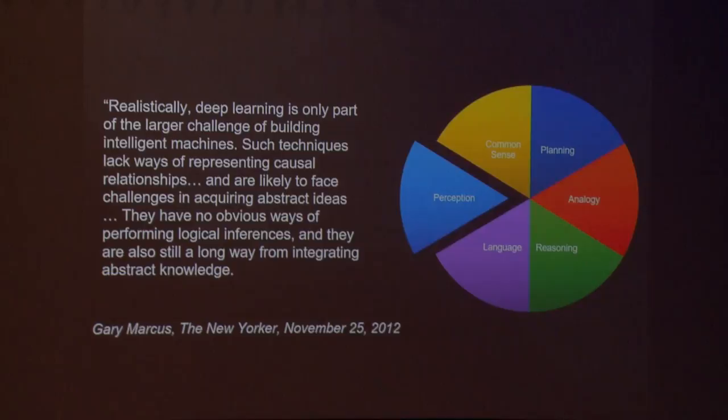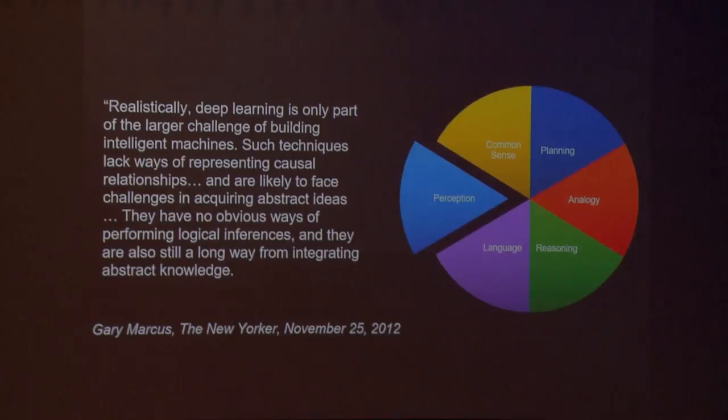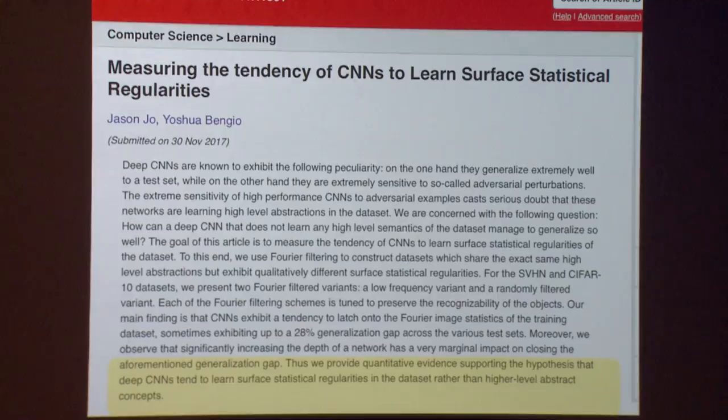I saw this coming a while ago. I wrote a New Yorker piece about this a little over five years ago saying: 'Realistically, deep learning is only part of the larger challenge of building intelligent machines. Such techniques lack ways of representing causal relationships and are likely to face challenges in acquiring abstract ideas. They have no obvious ways of performing logical inferences and are still a long way from integrating abstract knowledge.' I stand by every word. It's made progress on perception, but none of the other things that go into cognition. Here's Yoshua Bengio — one of the three founders of deep learning — with a recent paper on the tendency of convolutional neural networks to learn surface statistical regularity.